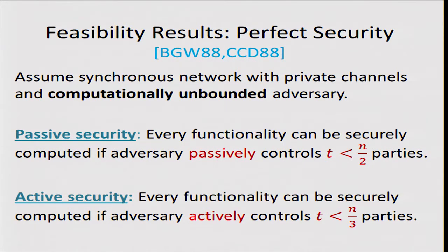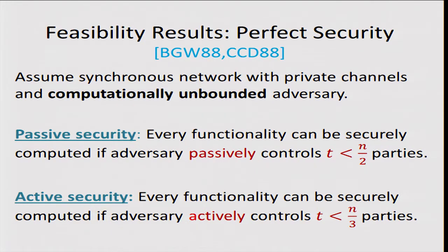In this talk, I want to focus on the setting of perfect security, introduced by Ben-Or, Goldwasser, and Wigderson, and independently by Chaum, Crépeau, and Damgaard. We assume a synchronous network with secure point-to-point communication channels, and the adversary is computationally unbounded. In this setting, we have two classical results: in the passive setting, every functionality can be computed as long as the adversary controls less than half of the players, and in the active setting, less than a third.